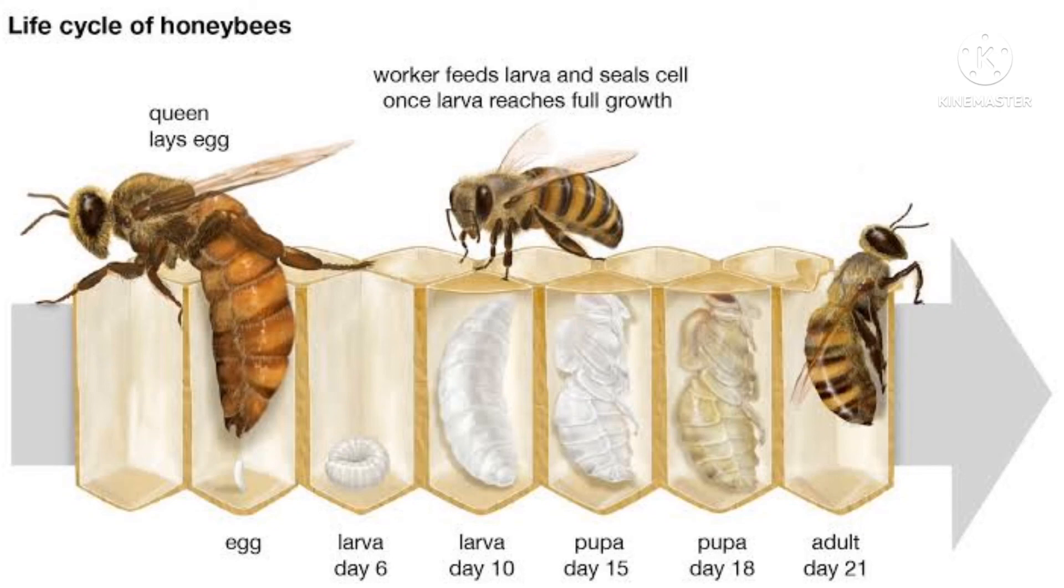It will undergo the pupation process. In the pupation process, it spins and covers itself. The larval stage covers itself with a thin silken cocoon. After three weeks, the young honeybee emerges out of the pupa.